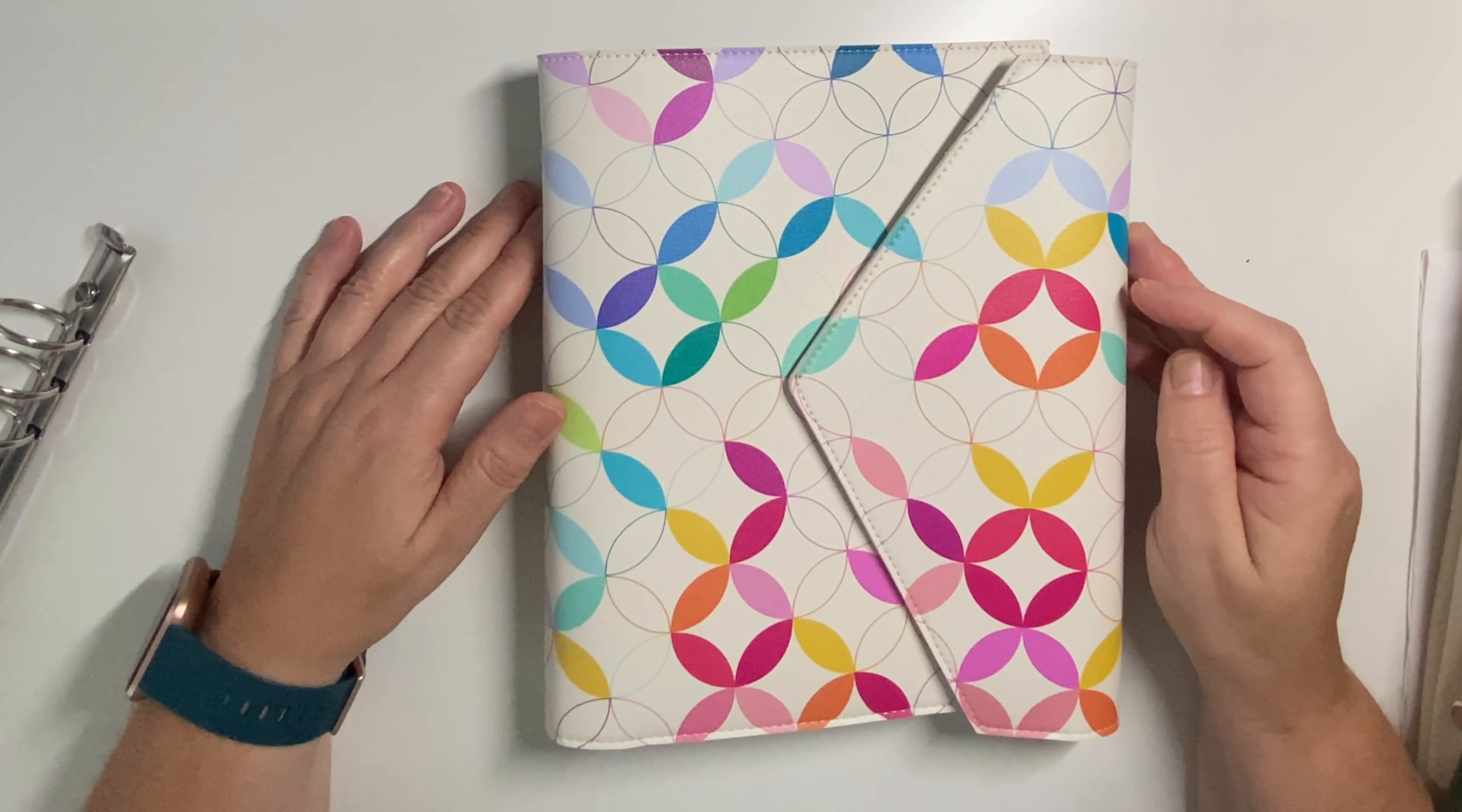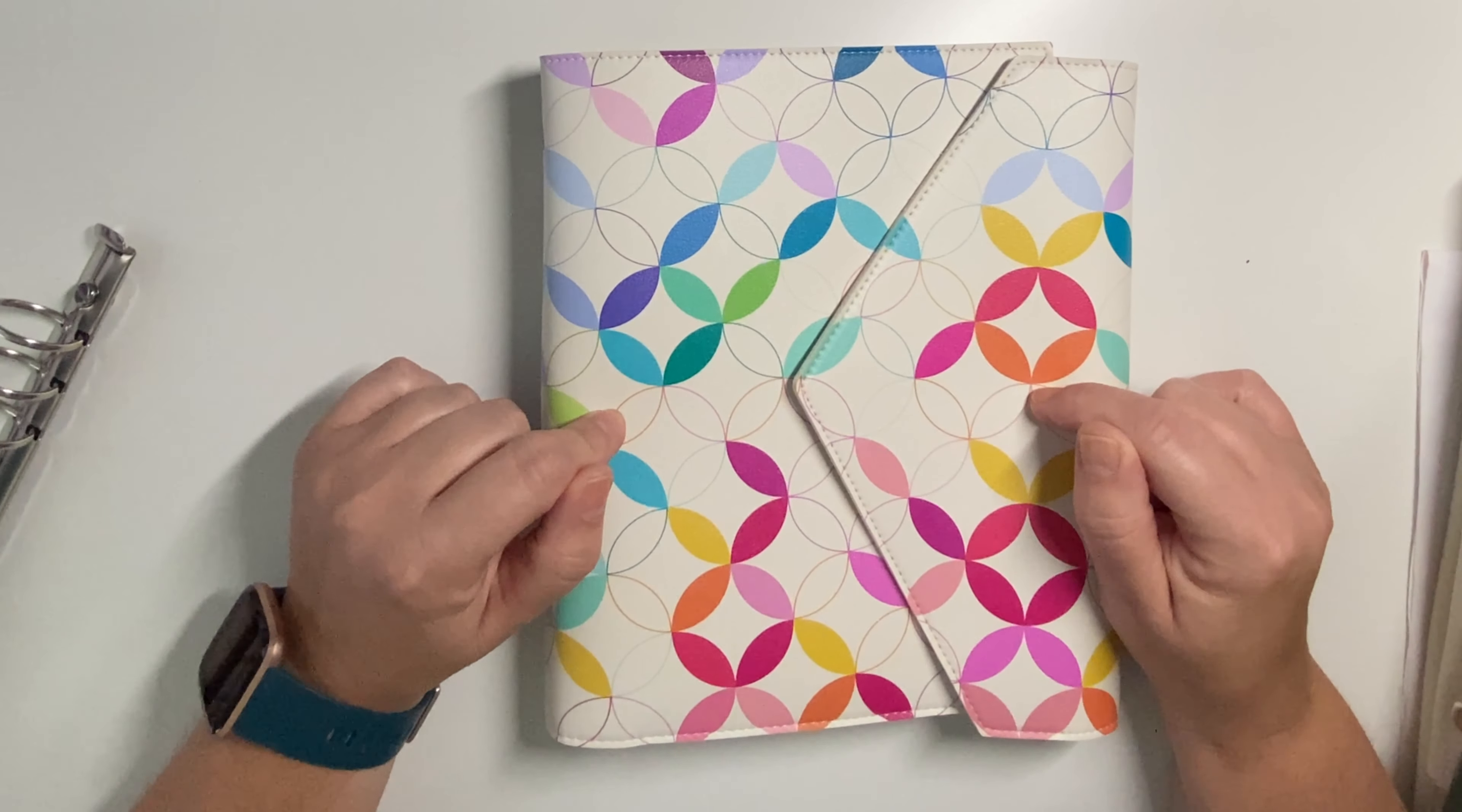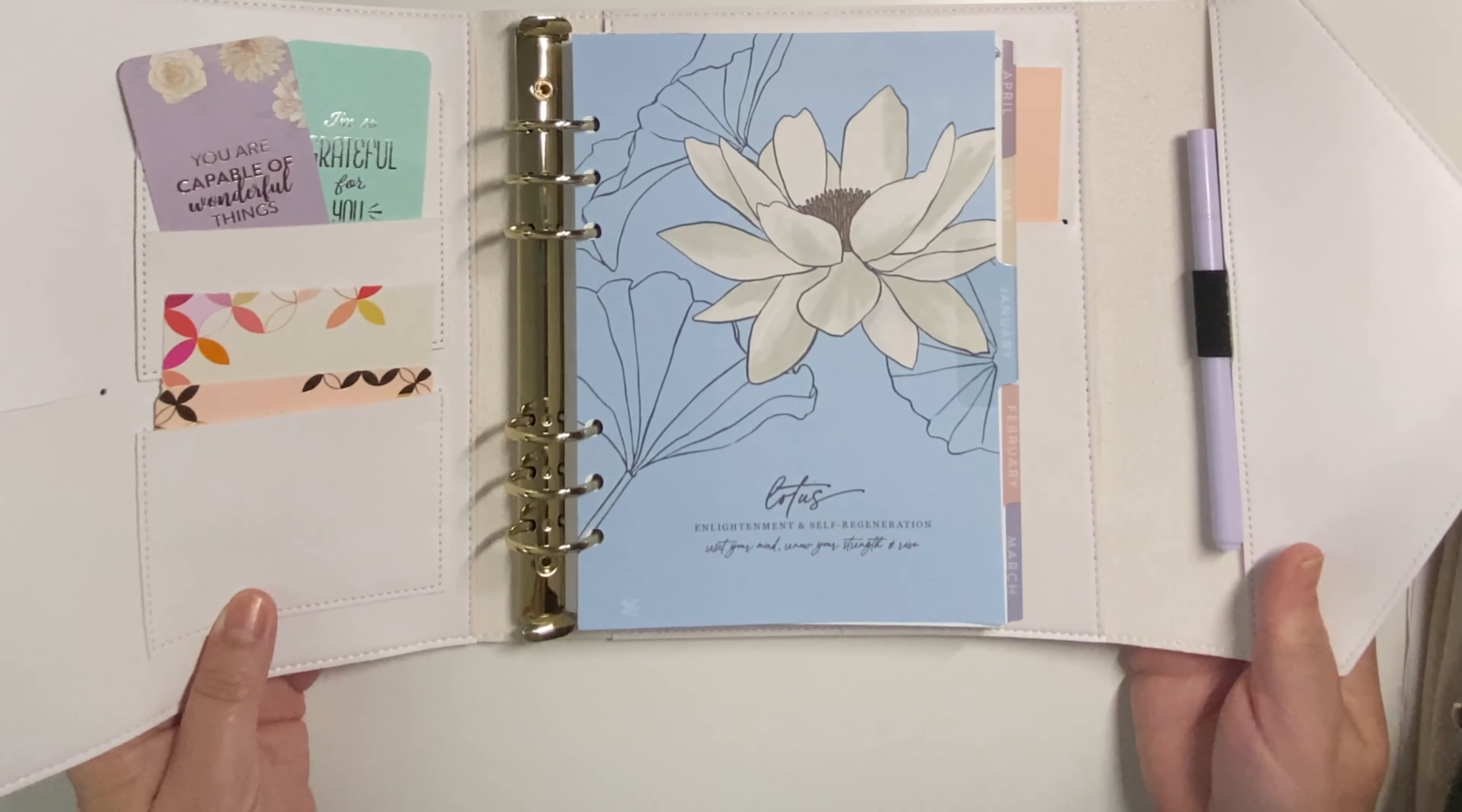Hello, it's Christine from Periwinkle Planner Co., and today I wanted to show you a project that I'm working on. I previously showed the Erin Condren A5 ring agenda that I got. When you get it from Erin Condren, it comes in this big fold-out cover that they call an agenda.